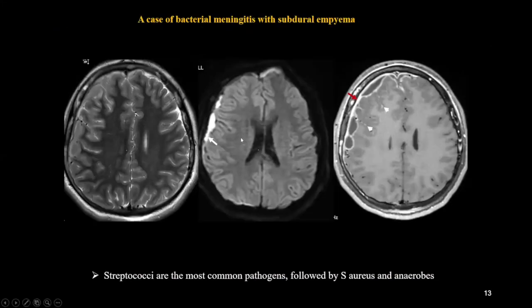In this case, again subdural empyema, but with no paranasal sinus or mastoid pathology. You can see this loculated subdural empyema extending to the contralateral side, as well as leptomeningeal thickening. Streptococcus is a very common pathogen in this kind of pathology and can present with both subdural empyema or subdural effusion. You have to rely on diffusion-weighted imaging: if restricting, you are dealing with subdural empyema; if non-restricting, it is usually a subdural effusion. Other pathogens causing subdural effusions include Staphylococcus aureus and anaerobes.